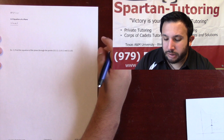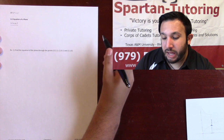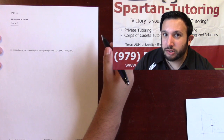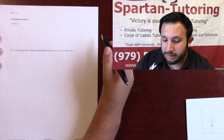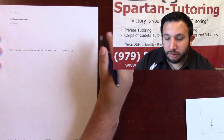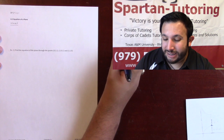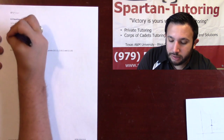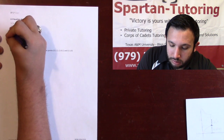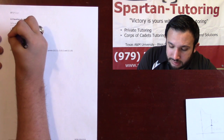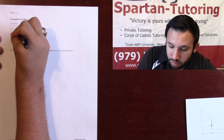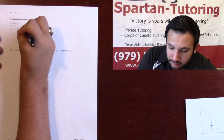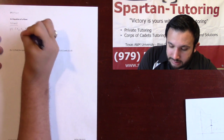Howdy! In this video we're going to talk about how to find the equation of a plane. There are two things that I need in order to find the equation of a plane. You need a point, which we're going to call x0, y0, z0.